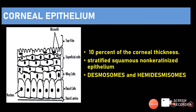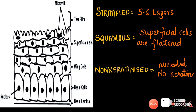Now let us talk about the corneal epithelium in more detail. It forms 10% of the total corneal thickness. The corneal epithelium is a stratified squamous non-keratinized epithelium. Stratified means multiple layers are present — in the corneal epithelium there are about five to six layers. The cells are squamous and non-keratinized, meaning they are nucleated but do not have keratin, unlike the keratinized squamous cells of the skin.